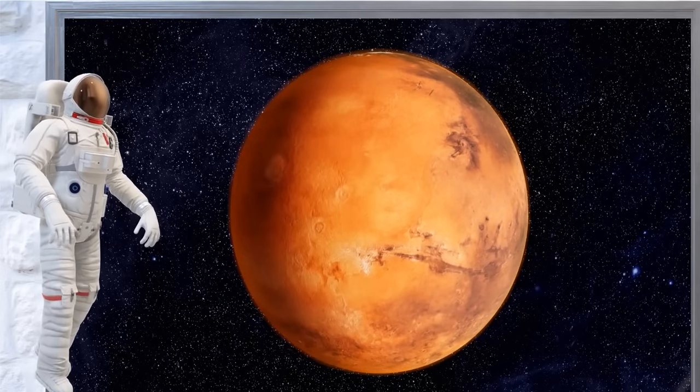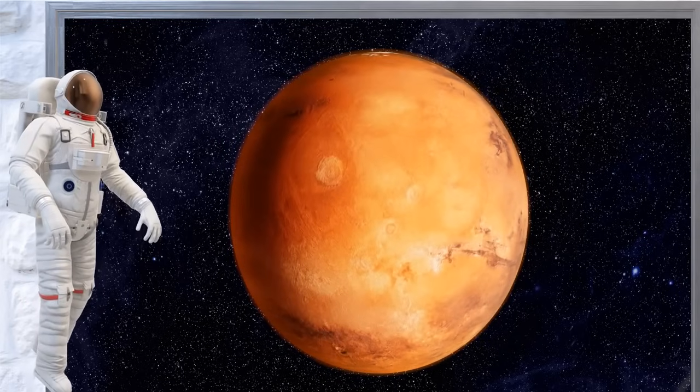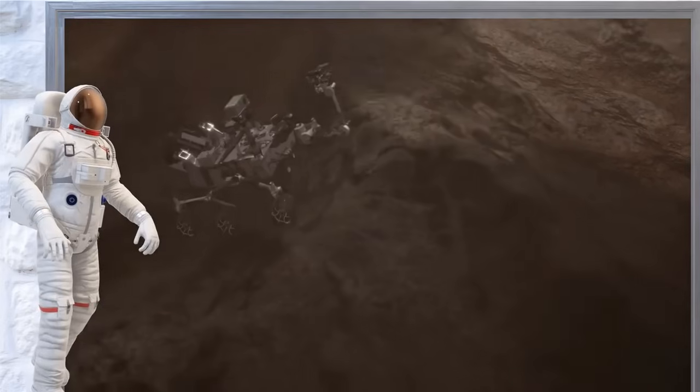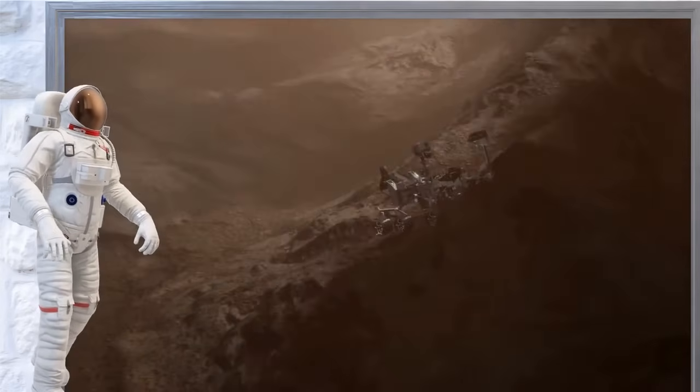Mars is the fourth planet and it's called the red planet because it looks red from far away. Scientists are really curious about Mars and often send robots there to explore.